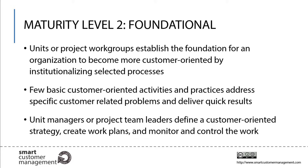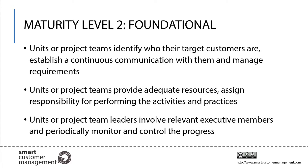In maturity level 2, unit managers or project team leaders define a customer oriented strategy, create work plans, and monitor and control the work to ensure the outcome is delivered as planned. Activities and practices quality assurance is institutionalized. People involved develop the competency to measure and analyze customer performance. Units or project teams identify who their target customers are, establish continuous communication with them, and develop and manage customer requirements. They also ensure that processes are planned and executed in accordance with the overall strategic business goals.